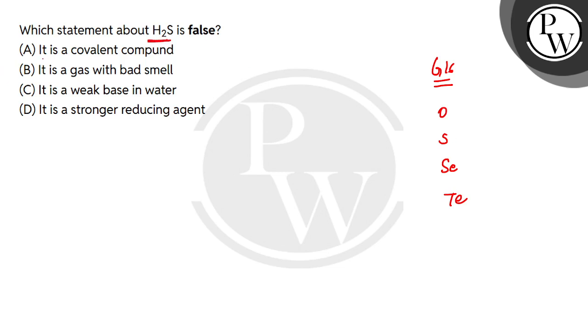You are saying that the first statement is a covalent compound. It is a covalent compound. It means that in the valence shell there are 6 electrons. So what are you doing to complete the octet? One electron is shared with hydrogen and the other electron is shared with hydrogen. So there is mutual sharing here. Hydrogen is complete and sulfur is complete. So it is a covalent compound.